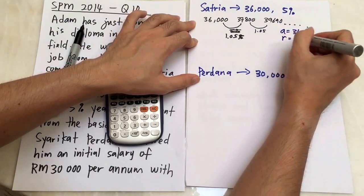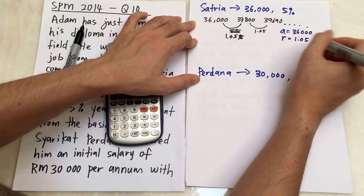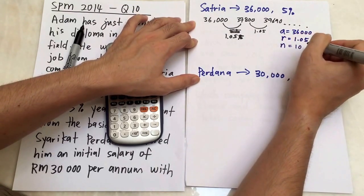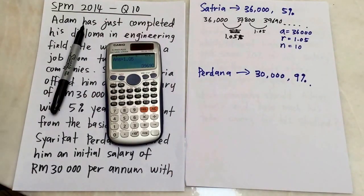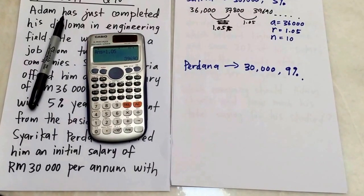In this case I know my A is 36,000, my r is 1.05, and my n is 10 years. Because for geometric progression, you have two formulas for your Sn.